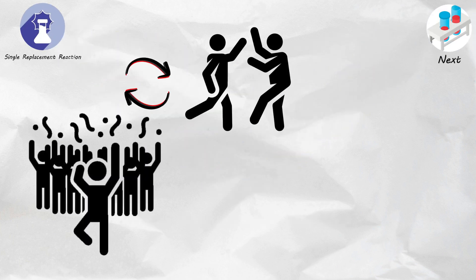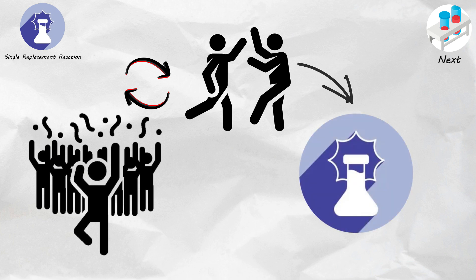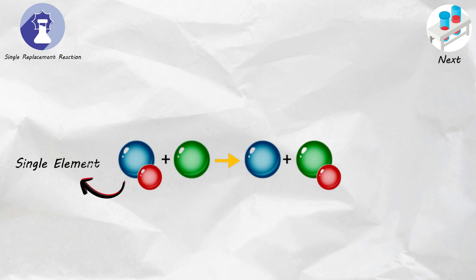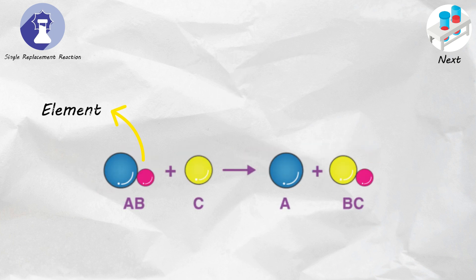Single replacement reaction. Imagine you're at a party and someone swaps partners on the dance floor. Single replacement reactions are like that, atoms swapping dance partners in a chemical reaction. In these reactions, a single element replaces another element in a compound. It's like a chemistry dance-off where one element says, I want to dance with that compound instead.